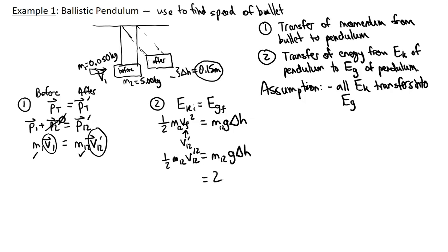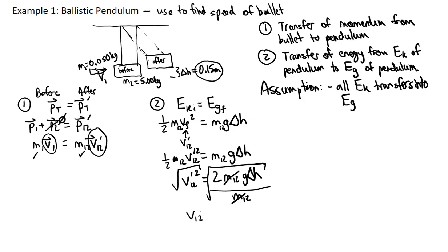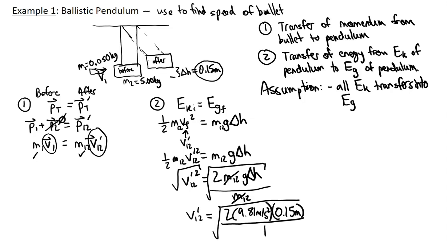Substituting the values: V1,2 prime = √(2 × 9.81 m/s² × 0.15 m). If the height were given in centimeters, we'd divide by 100. The masses cancel out, and we calculate V1,2 prime = 1.71552 m/s. I'm keeping extra significant digits here because I'll need this value in the next step.